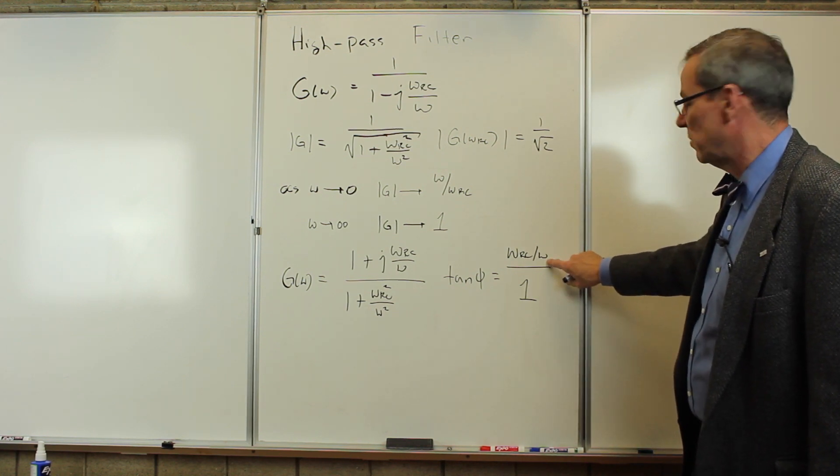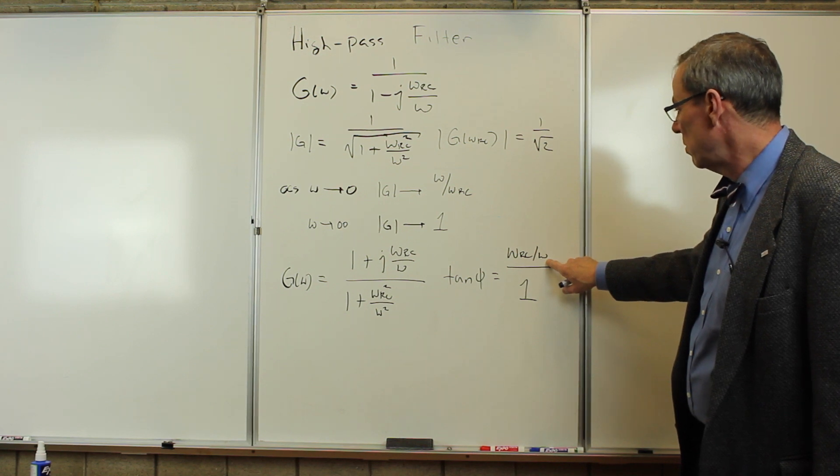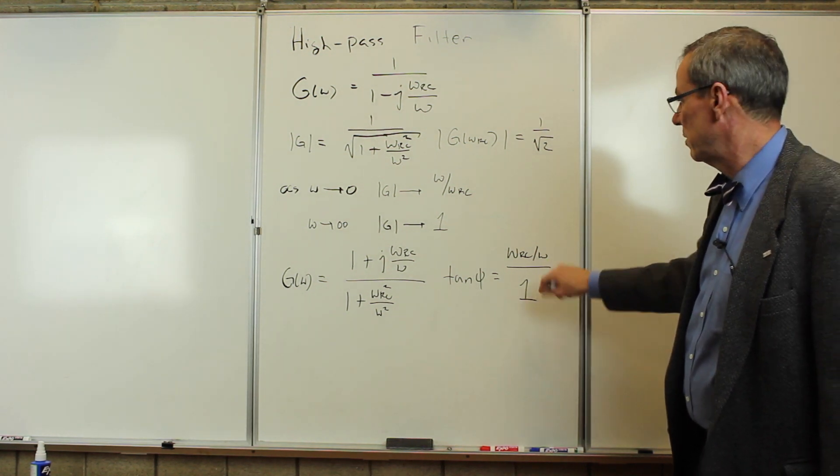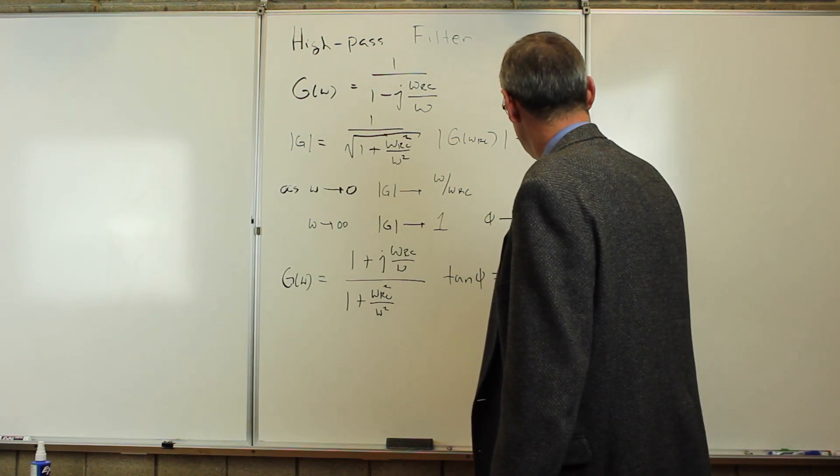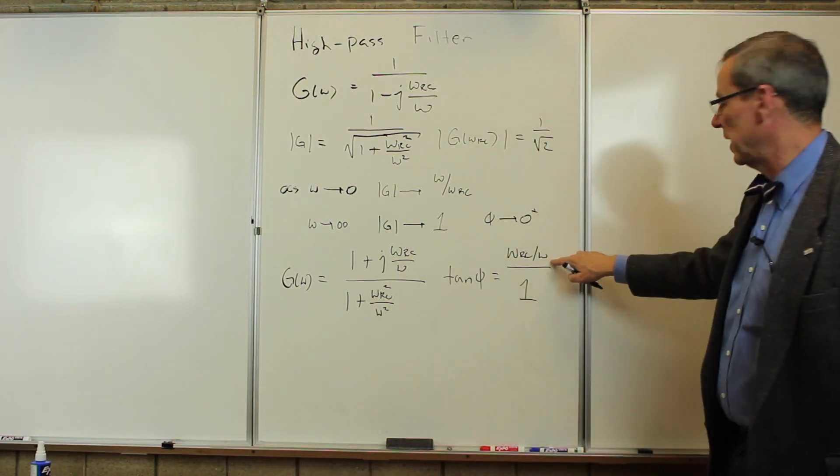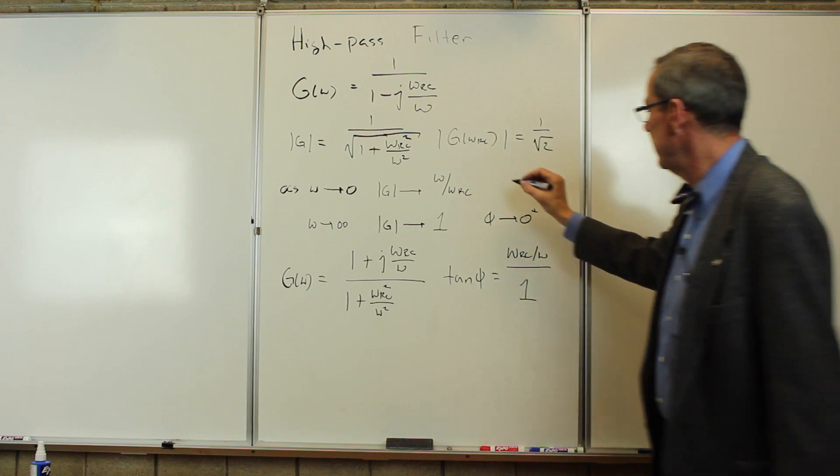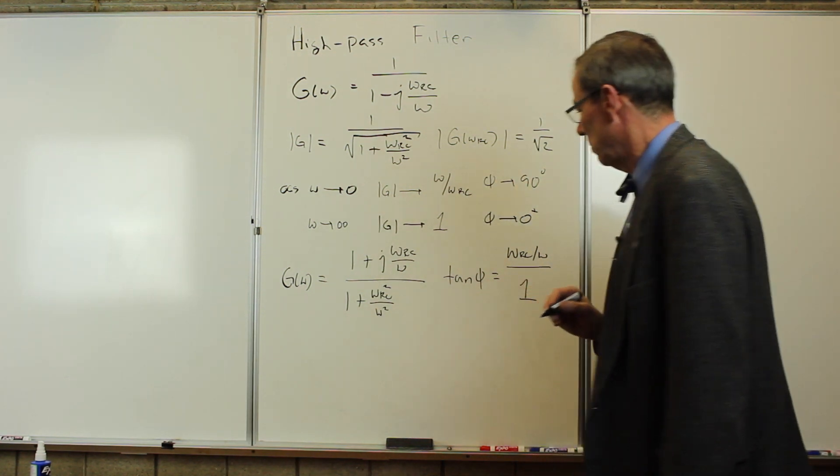As omega goes very large, this goes to 0, and the phase goes to 0. So here, omega large, phase goes to 0 from the positive side. As omega goes very small, this blows up. This goes to infinity, so the phase goes to 90 degrees.